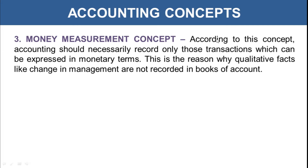Third is the money measurement concept. According to this concept, accounting should necessarily record only those transactions which can be expressed in monetary terms. Only quantitative transactions are recorded in accounting, and qualitative facts — such as any change in management — are not recorded in books of account. There are many qualitative factors which may influence a business, but accounting is only concerned with monetary transactions.